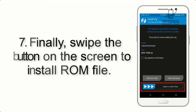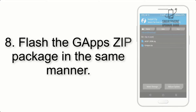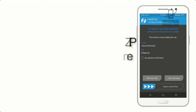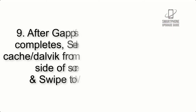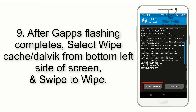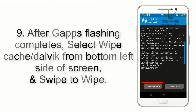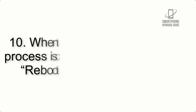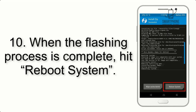Step 7: Swipe the button on the screen to install the ROM file. Step 8: Flash the gapps zip package in the same manner. Step 9: After gapps flashing completes, select Wipe Cache and Dalvik from the bottom left side of the screen and swipe to wipe.